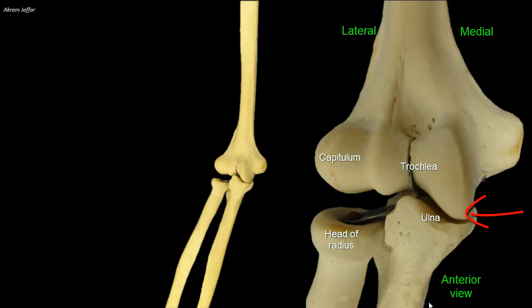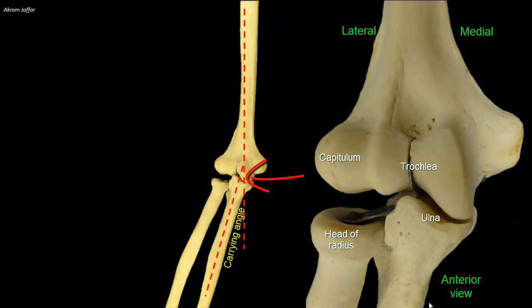The medial part of the trochlea is at a more distal level than the capitulum, which is a causative factor for the carrying angle at the elbow. When the forearm is in the anatomical position, that's to say extended and supinated, the arm and forearm are not in the same line. The forearm is directed laterally, forming a carrying angle between the axis of a radially deviated forearm and the axis of the humerus. Normally, the carrying angle is 5 to 15 degrees away from the body, allowing the extended forearm to clear away from the side of the hip during swinging of the upper limb and while carrying loads, hence the name carrying angle.